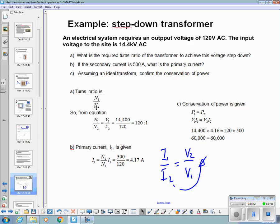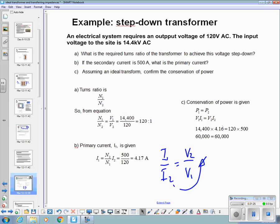Assuming an ideal transformer confirm the conservation of power. So we're going to multiply the primary voltage 14400 with the primary current, and this side is secondary voltage 120 times secondary current 500, and they both equal 60,000. So given a small amount of information about an ideal transformer situation you can calculate other values using the full ratio formula.